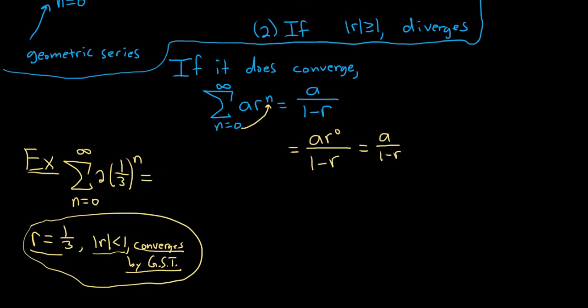So let's go ahead and find the sum. What you can always do is you just take this number here and you put it where the n is, and it goes up top. So 2, 1 third to the 0, and on the bottom, you just have 1 minus 1 third. It's always 1 minus r on the bottom. You just take this number and you put it here, and it goes up top.